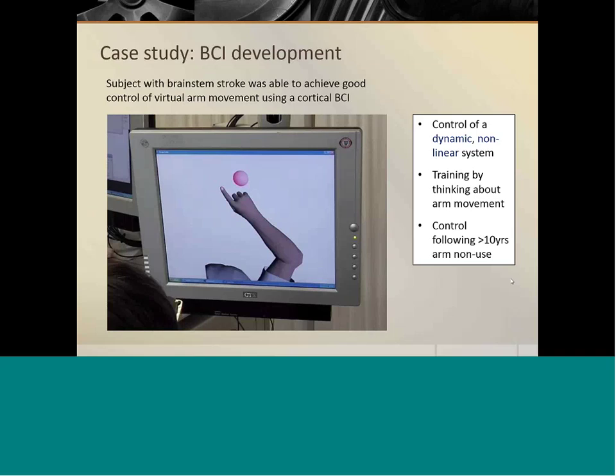So I can show you a little video of the results of that. The person is presented with targets on the screen appearing at random locations in a variety of sizes. And she has to control the arm to reach the target using the brain-computer interface. When the arm is over the target she then imagines making a fist-clenching maneuver and that activates a state change which simply drives the flexion of the finger to touch the target. So she was able to do that fairly well. She was able to have control of this dynamic non-linear system even after more than 10 years of arm non-use. And importantly, she was able to learn to do that simply by thinking about arm movement.